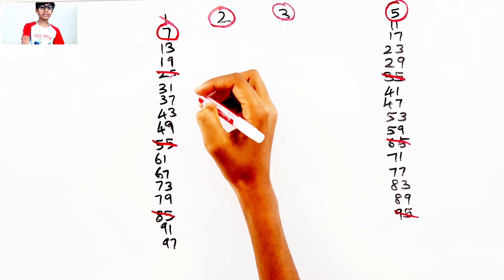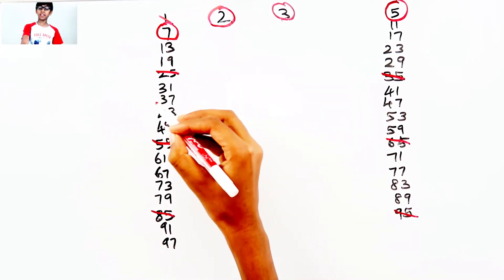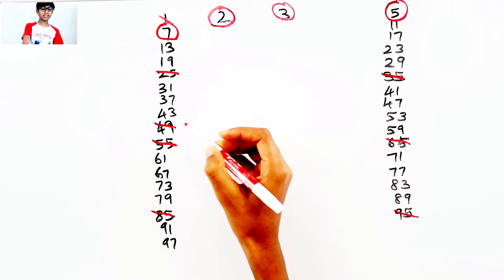I just need to count 1, 2, 3, 4, 5, 6, 7. 49 can be divided by 7, so I'll cross that out.